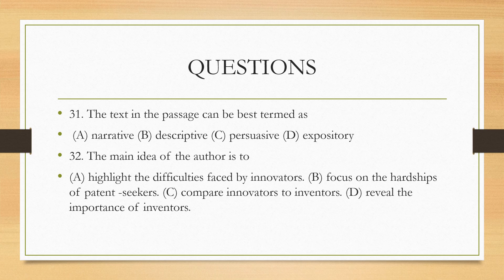Moving to question one: 'The text in the passage can be best termed as.' It was clear from the first paragraph that the tone had no perspective, so the opinion-based approach is eliminated — it is a fact-based passage. The four options are: narrative, descriptive, persuasive, and expository. Narrative — no, because it is not storytelling. Now, expository: the literal meaning of expository is similar to descriptive, but there is a difference. Descriptive merely describes a state of facts with no perspective and no point to prove.